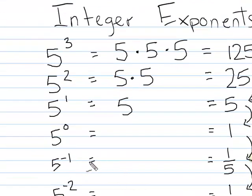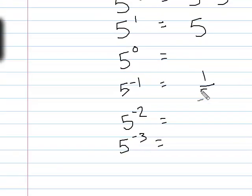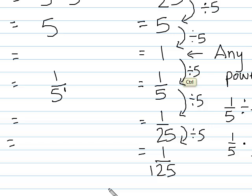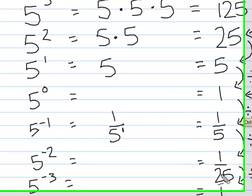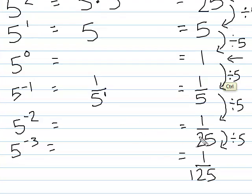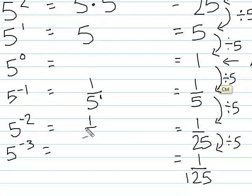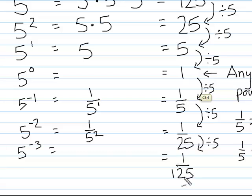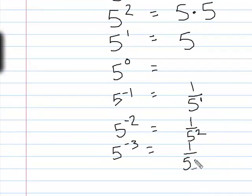Looking at the negative exponents: one-fifth — since five is the same as five to the first power, one-fifth is the same as one over five to the first power. Twenty-five is five to the second power, so one over twenty-five is one over five to the second power. Finally, one over one hundred twenty-five is one over five to the third power.